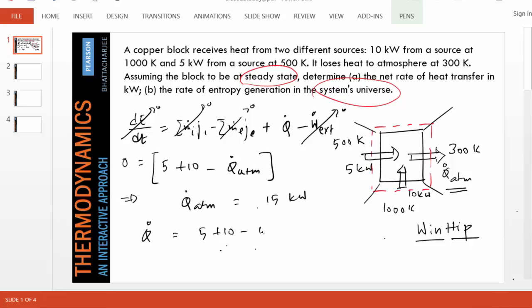But the question says determine the net heat transfer Q dot. So what is Q dot? 5 plus 10 minus 15 equals 0 kilowatts, which is kind of obvious from the energy equation. Take a look at that: 0 equals 0 plus 0 minus 0, so this must be 0. But nevertheless, now we know Q atmosphere.